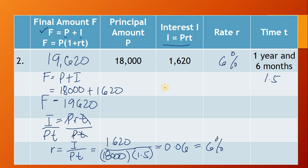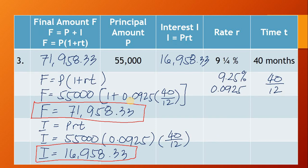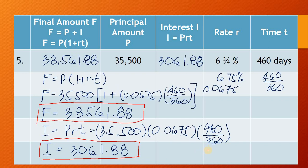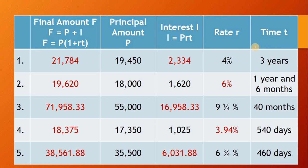That is item number 2. For item number 3, we have the same answer as on the spreadsheet for the final amount and interest. Item number 4 has a final amount of 18,365 and a rate of 3.94%. Finally, item number 5 has a final amount of 38,561.88 and an interest amount of 3,061.88. This is the summary of our computation — I have presented both spreadsheet computation and manual computation. Thank you for watching.